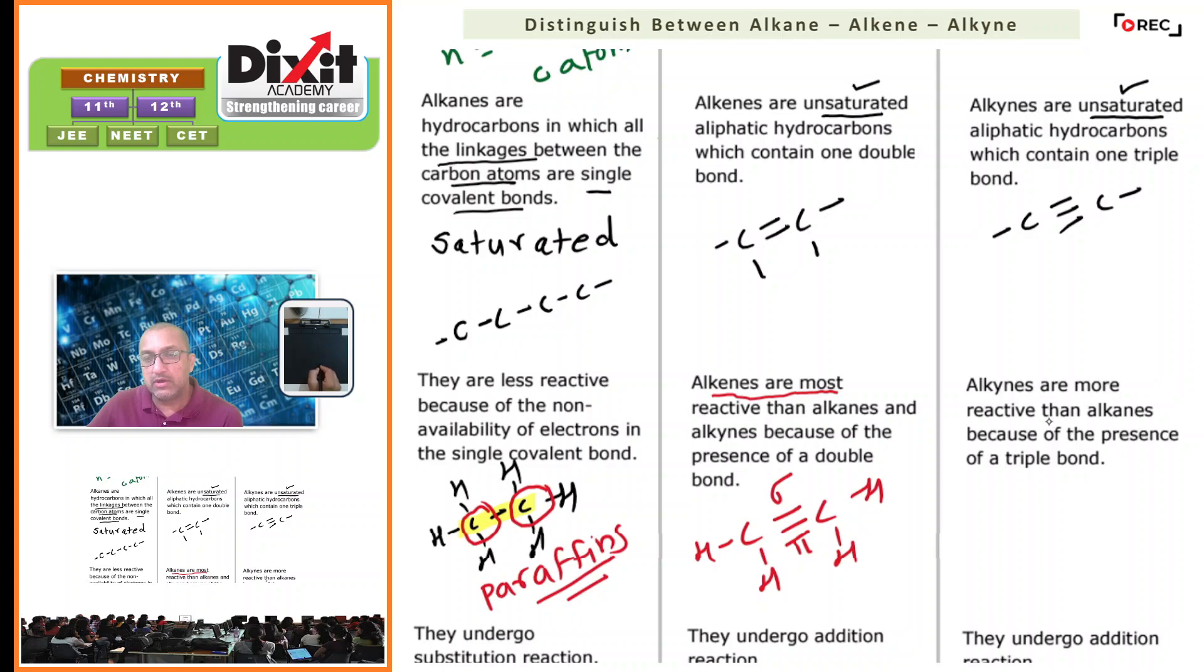Alkynes are more reactive than alkanes but less reactive in comparison with alkenes because of the presence of a carbon-carbon triple bond. In alkynes, the type of linkage present is a carbon-carbon triple bond. Logically, more energy is needed to break this triple bond, and therefore, alkynes are more reactive than alkanes but less reactive than alkenes.